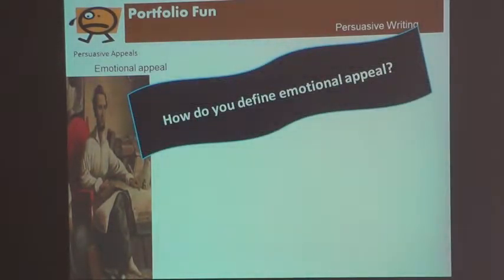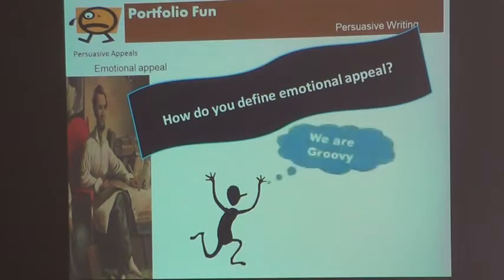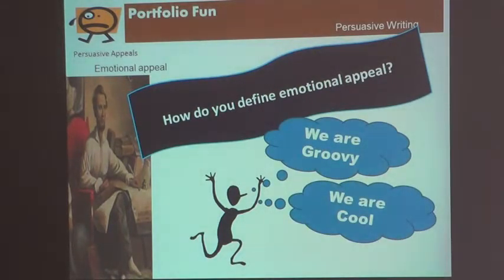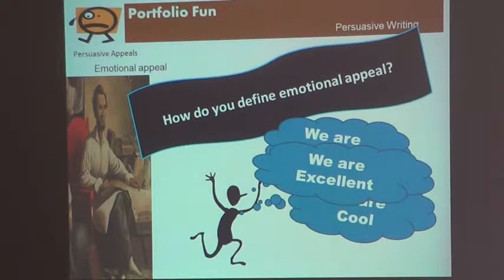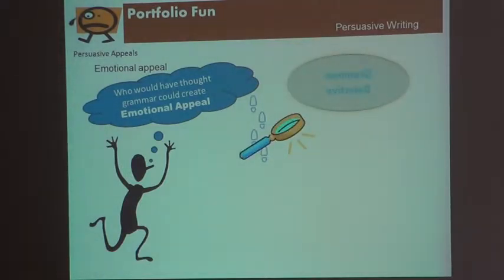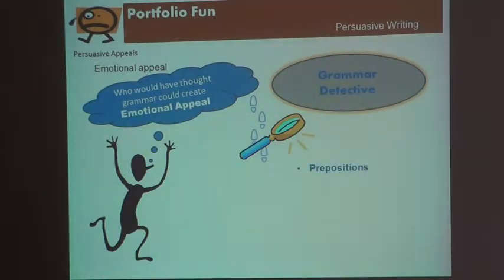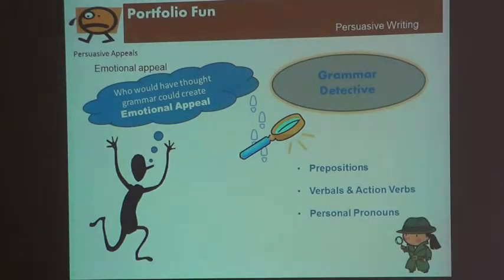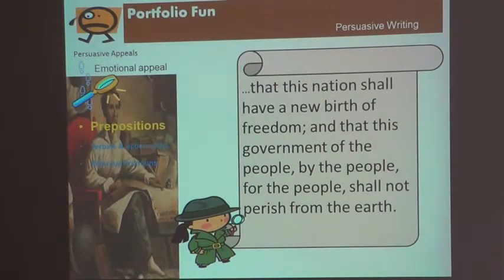How do you define emotional appeal? We are groovy. We are cool. We are excellent. How does that make you feel? If you're told that over and over again, how does it make you feel? Who would have thought that grammar could create emotional appeal? You are going to become a grammar detective today. We are going to be looking at how you can use prepositions, verbals and action verbs, and personal pronouns. So grab your hat, grab your overcoat, and your slide glass, and let's see how we can use grammar to create emotional appeal.